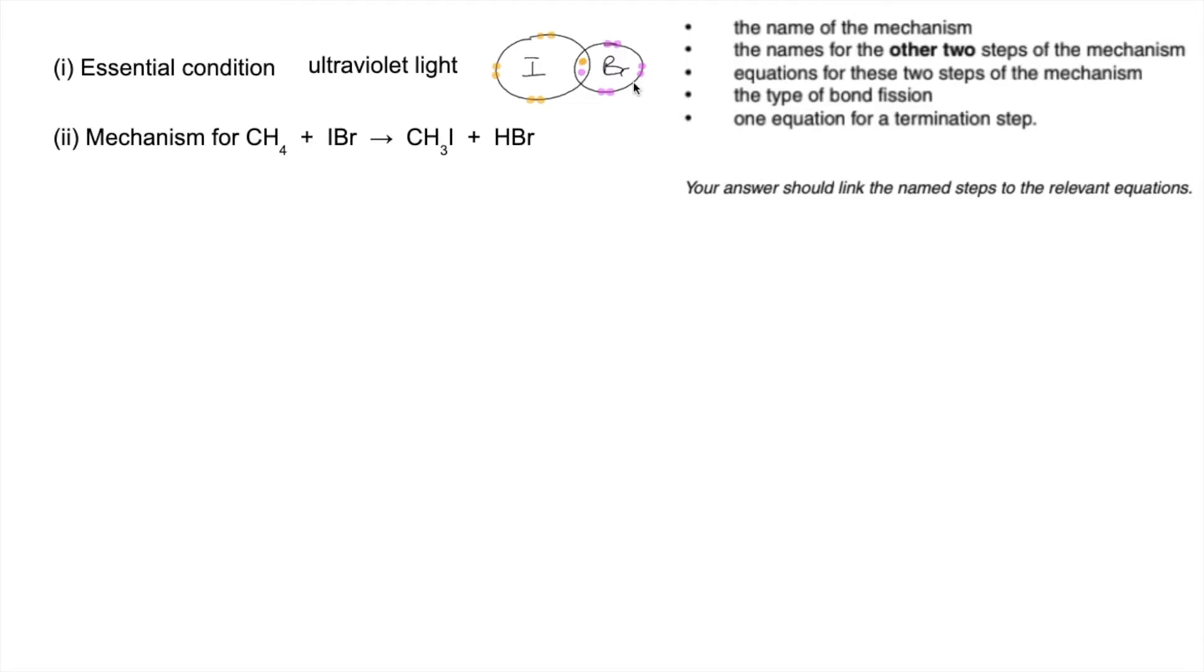And you'll notice that the reason I said this was a bit different to the norm is because normally they would ask about a regular halogen, so it would be I2 or Br2 or Cl2, whereas this is a mixed halogen, so we've got I covalently bonded to Br.